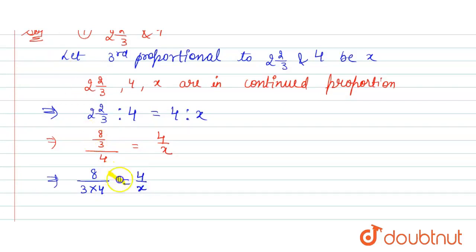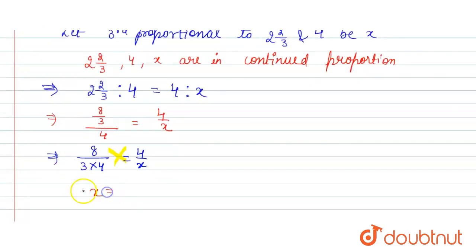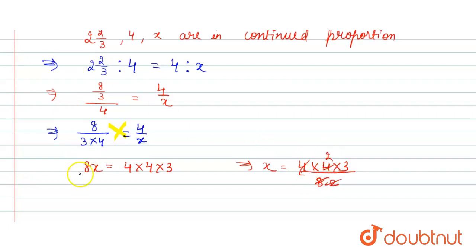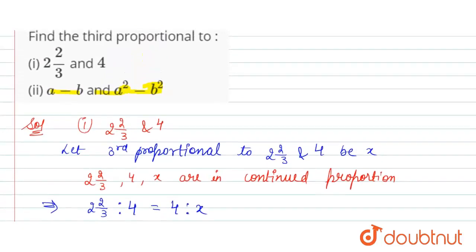Now cross multiply, so 8x is equal to 4 into 4 into 3. From here the value of x is equal to 4 into 4 into 3 divided by 8. Here 4 cancels with 8 leaving 2, so value of x is equal to 6. This is the third proportional and this is our answer for the first part.